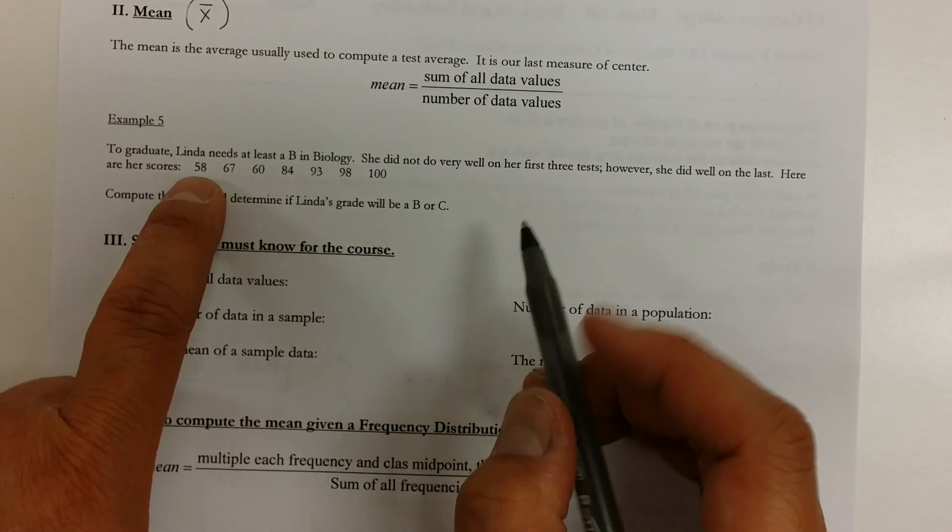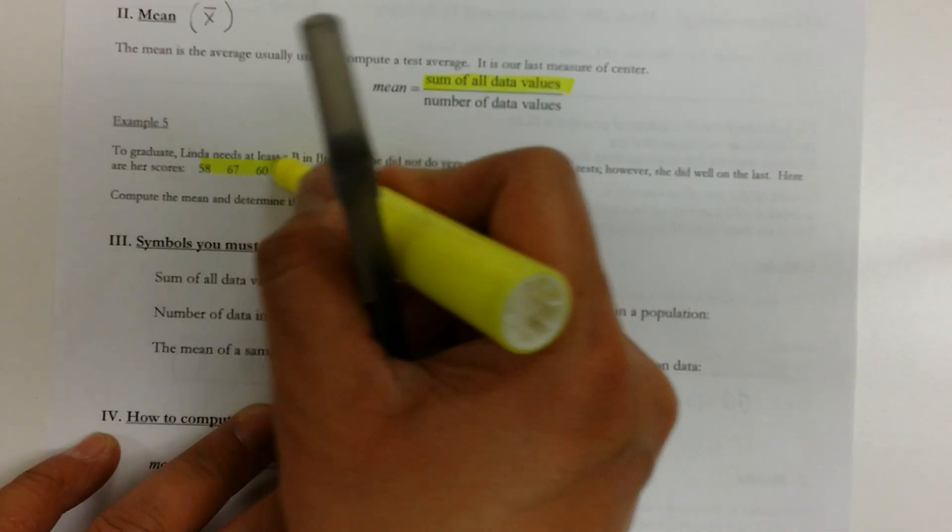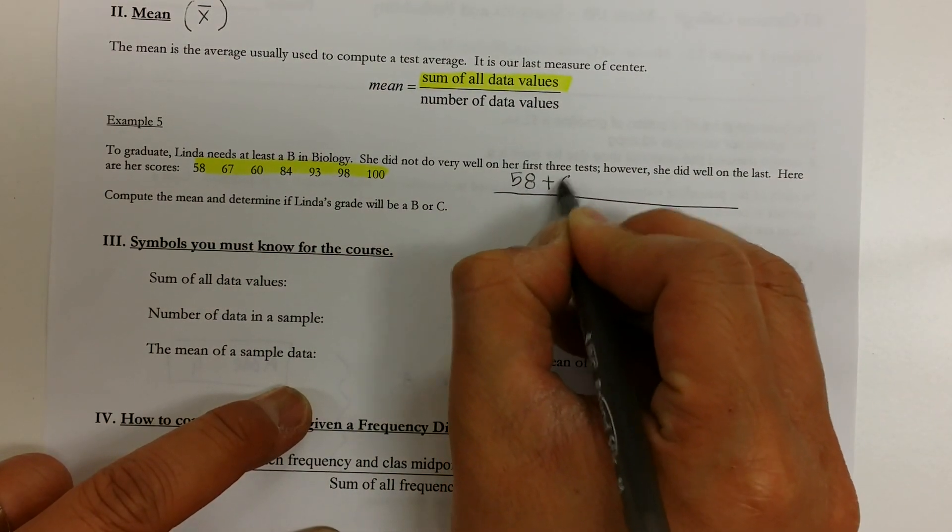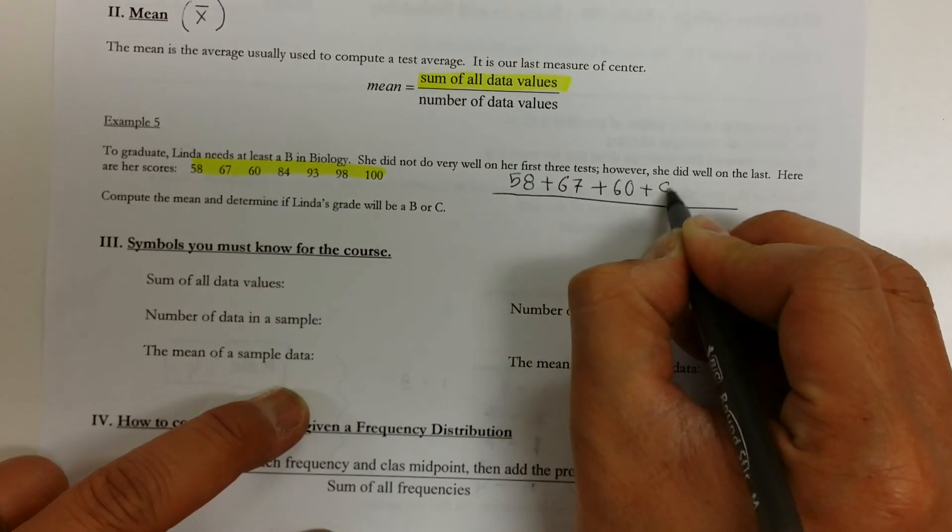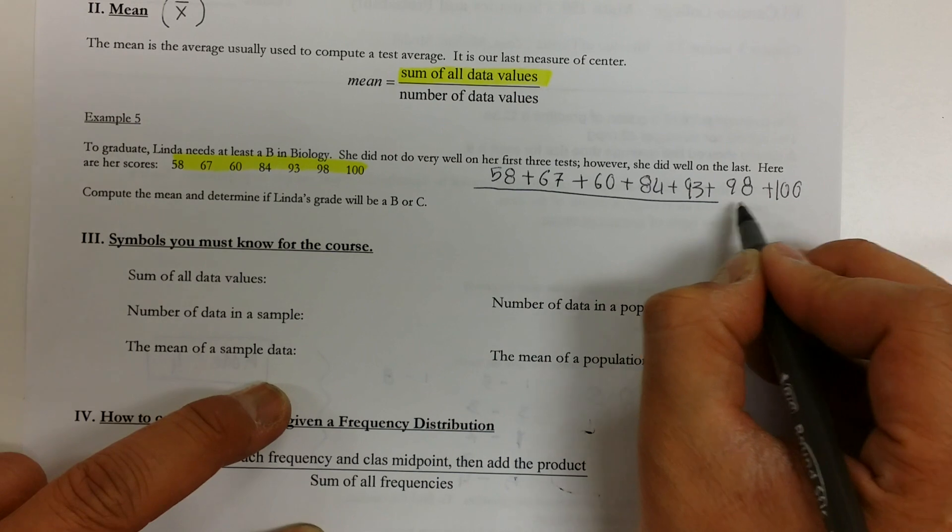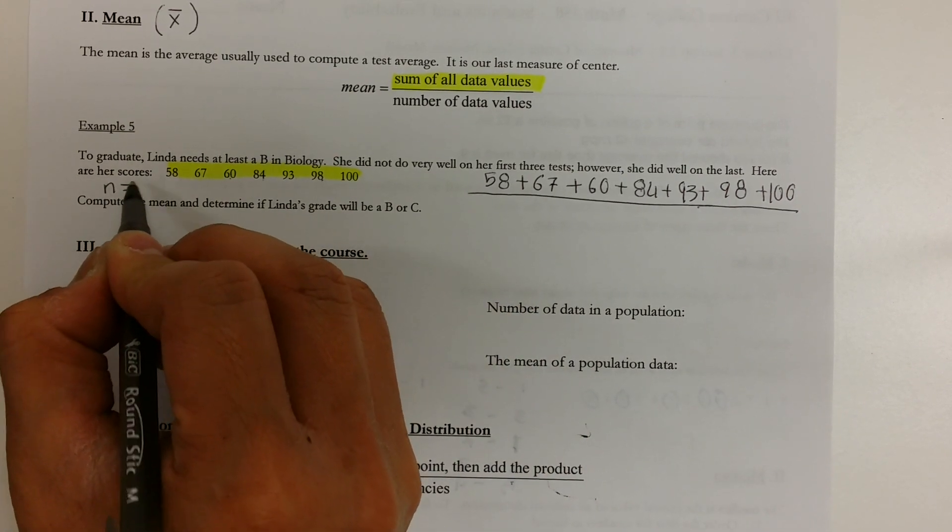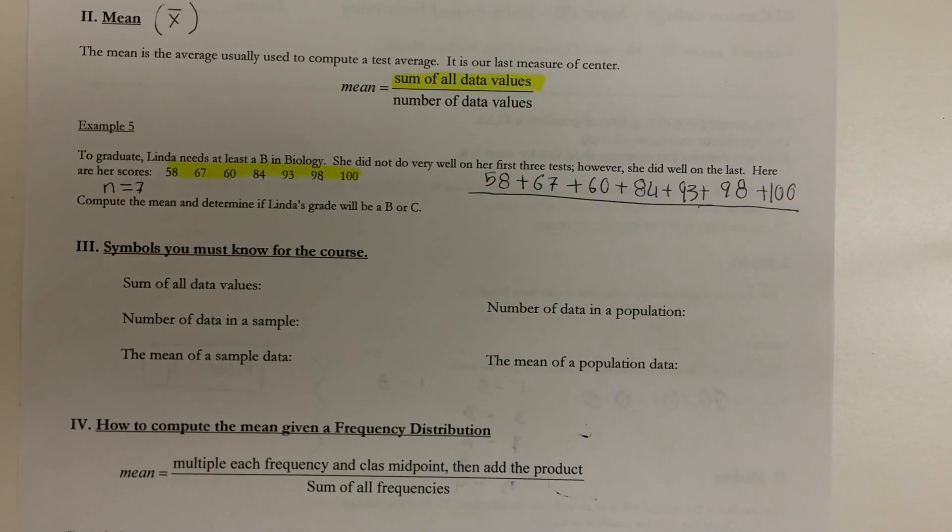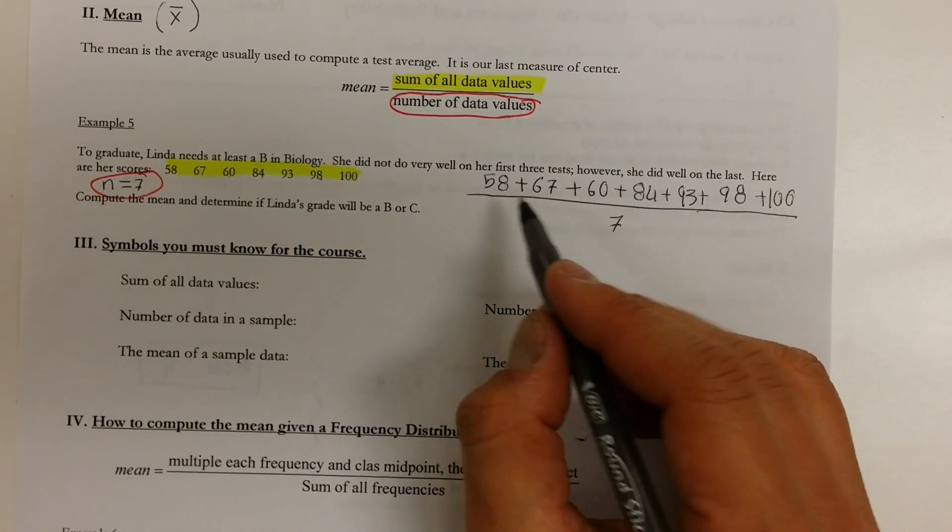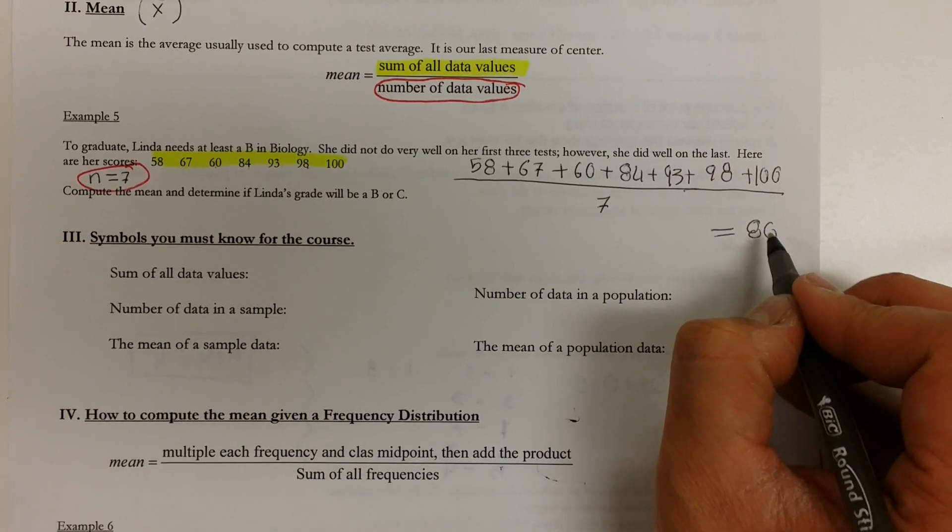Here are her test scores. So I'm going to start by adding up the data values. I'm going to go 58 plus 67 plus 60 plus 84 plus 93 plus 98 plus 100. So she took 7 tests and that is the number of data values which is 7. So we divide that by 7. And if you add all these up and divide it by 7, you're going to get 80. And 80 is an average or 80 is the mean.